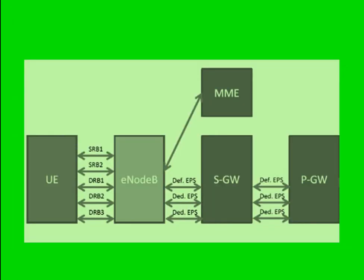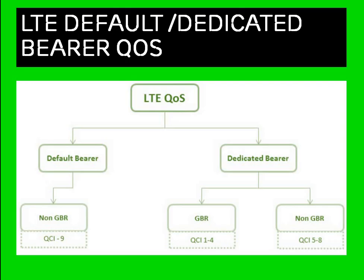In this diagram I want to show what kind of bearer is present in which network elements. Between UE and eNodeB we have SRBs and DRBs — SRB is for signaling and DRB is for data (data radio bearer and signaling radio bearer). Between eNodeB to S-Gateway and S-Gateway to P-Gateway, the default and dedicated bearers are present. As you can see in the diagram, we have one default bearer and two dedicated bearers.